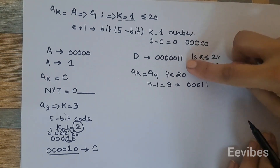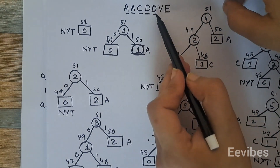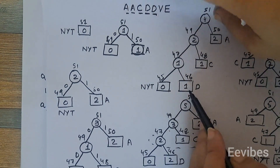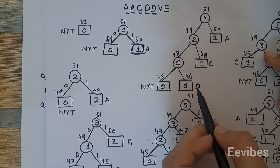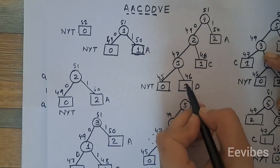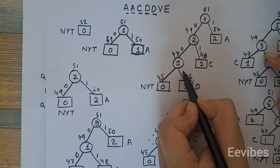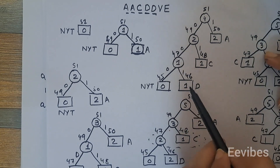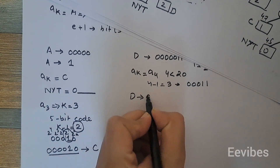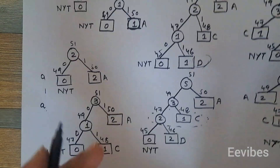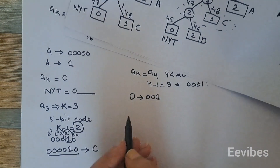The next symbol is 'd' again. Since one 'd' has already arrived and is in the tree, we simply traverse from the root to where 'd' resides. Reading the path: 0, then 1, then 0, then 0, then 1 — the code transmitted is '001'. When a node is already present in the tree, there is no need for the NYT or fixed code.